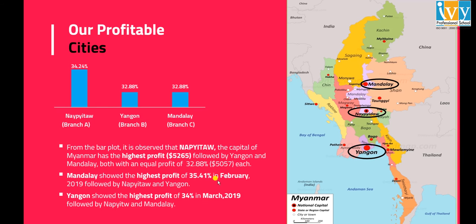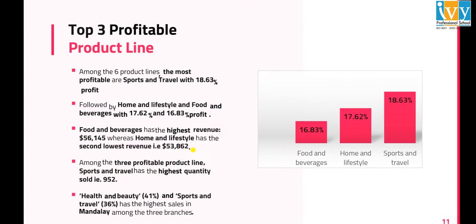As evident from the bar plot, Napitao, the capital of Myanmar, has the highest profit, followed by Yangon and Mandalay. The top three profitable product lines are Sports and Travel, Home and Lifestyle, and Foods and Beverages — where Foods and Beverages has the highest revenue, Home and Lifestyle has the second lowest revenue, and Sports and Travel has the highest quantity sold.